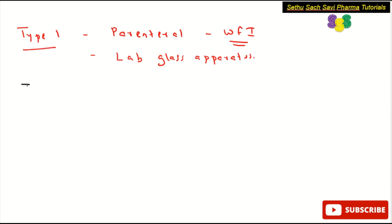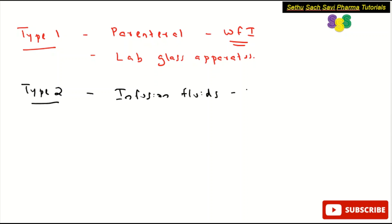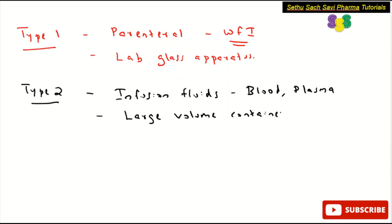Type 2 is the treated soda lime glass, mainly used for infusion fluids like blood and plasma. They are also used for large volume containers.